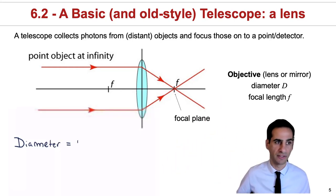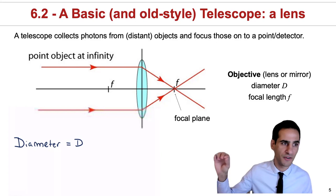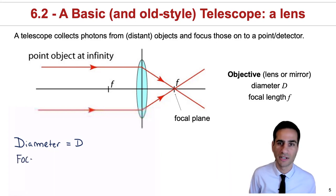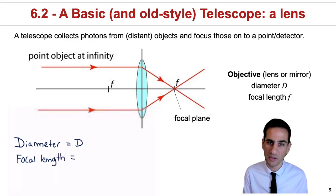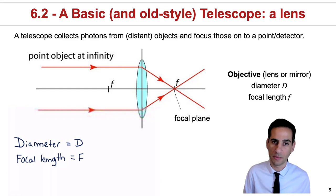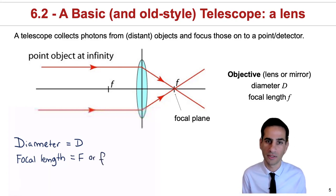This lens will have a diameter, as I'm trying to show here, and also a focal length. You could characterize any telescope, especially a refractor, just in terms of these two properties, but even reflective telescopes can be characterized by these two numbers.